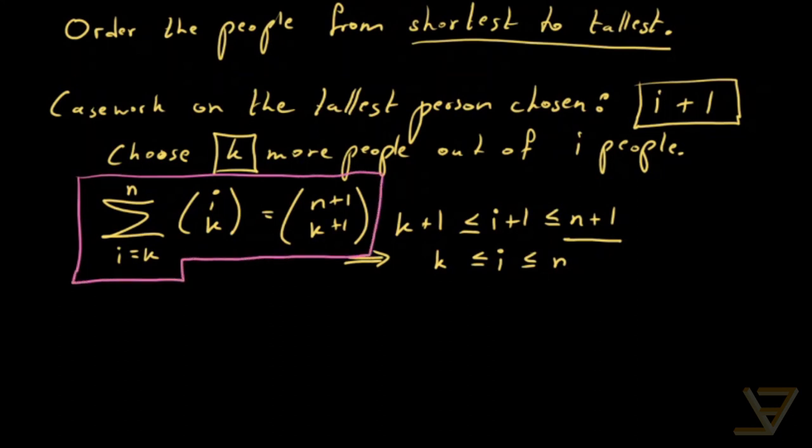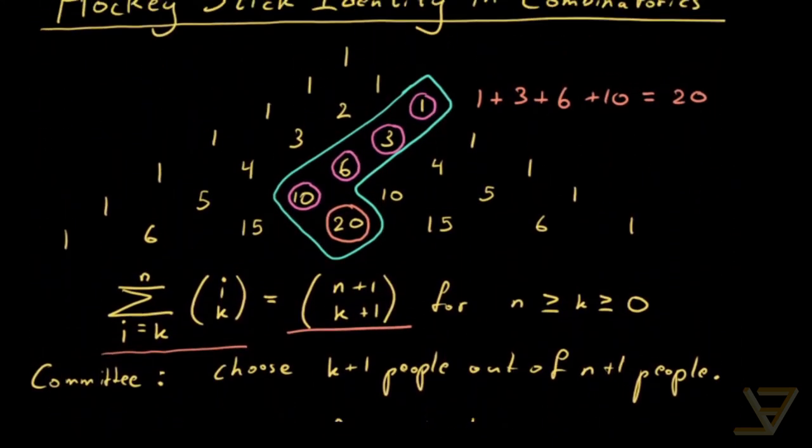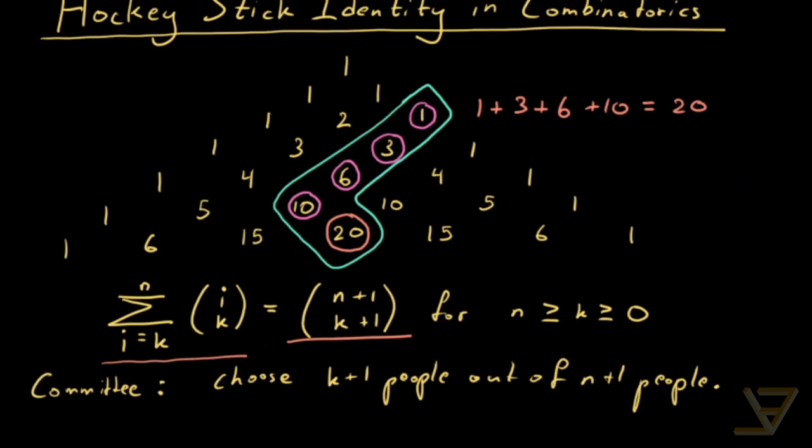I just want to leave you with a reverse identity because remember Pascal's identity is symmetric left to right. So what happens on the left also happens on the right. So if we were to pick, for example,